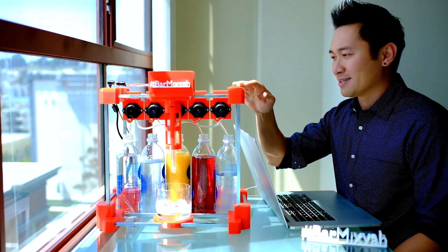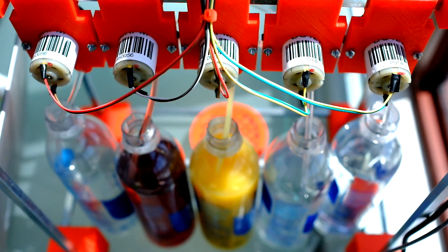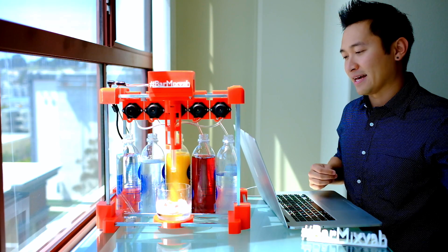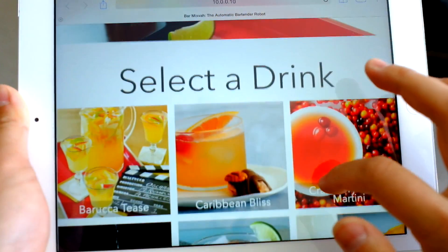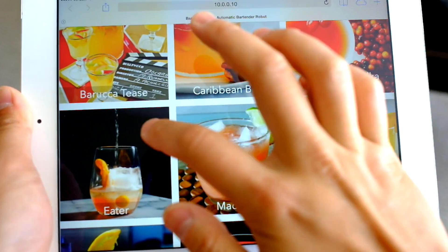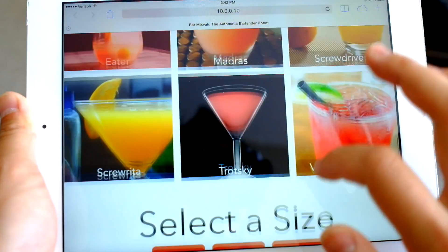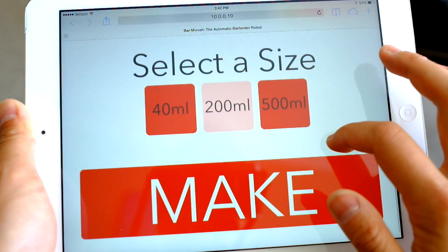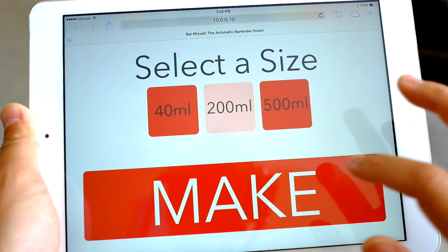What it does is you can put in any five ingredients you want into these bottles, and Bar Mixpa has a web interface that can be used to select whatever drink you want to make out of these five ingredients and then the size. All you have to do is click make, and it'll start making the drink.